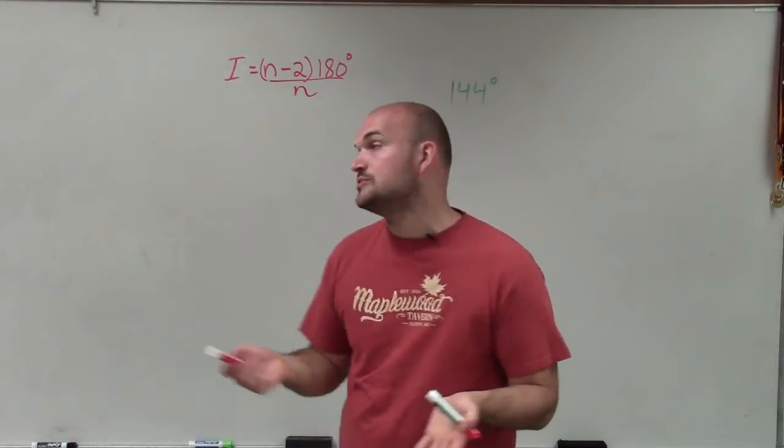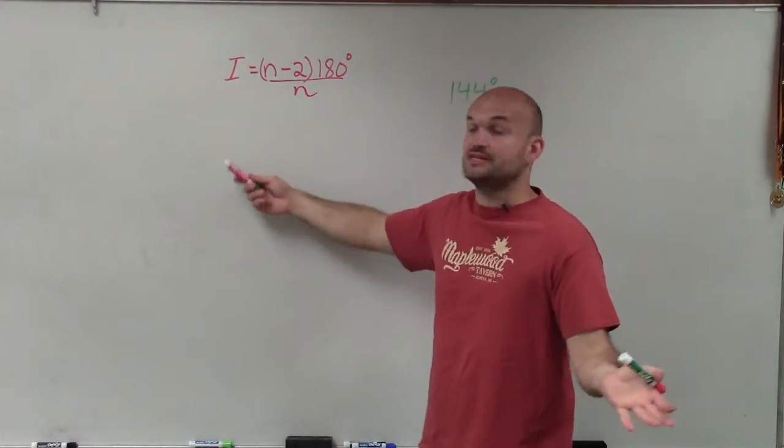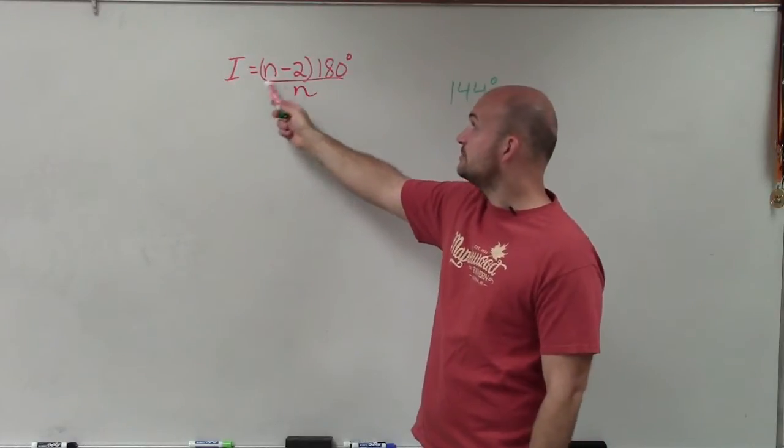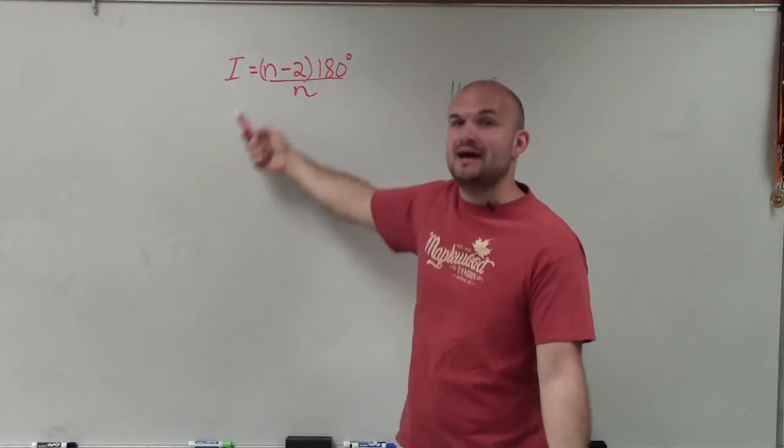To do this, I'm going to use our formula to find the measure of an interior angle, which is represented by i, equals n minus 2 times 180 divided by n.